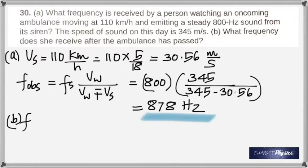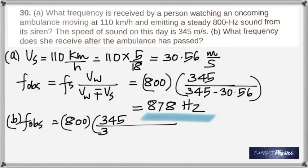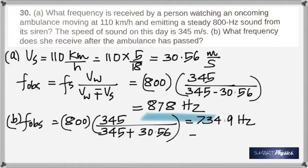And it says in the B part, what frequency does she receive after the ambulance has passed? Now what happened in this case is the source is going away from the listener. And when the source goes away, the perceived frequency is going to be less. So if this is going to be less, then in the denominator you're going to add instead of subtracting. That's all. So once again, same thing, except that's the difference. It's 345 plus 30.56. And when you solve that, you get 734.9 Hertz. Round it off to 735.